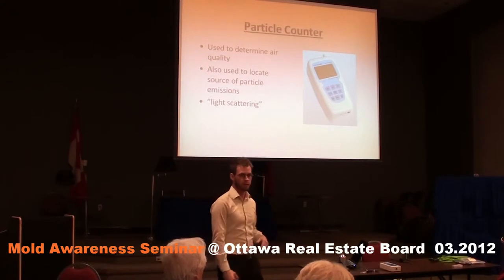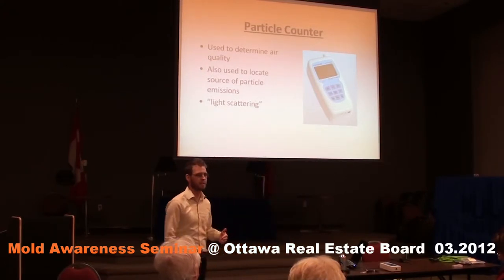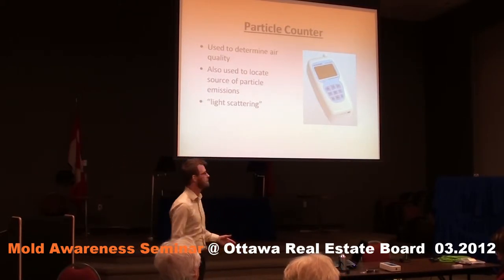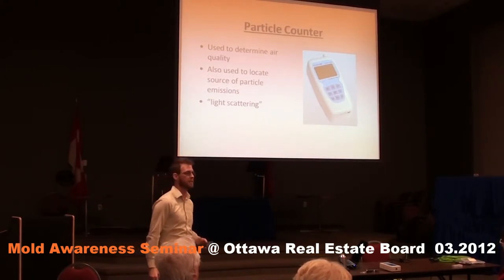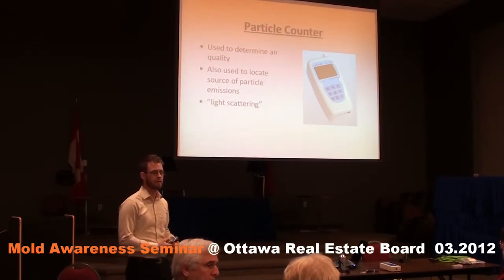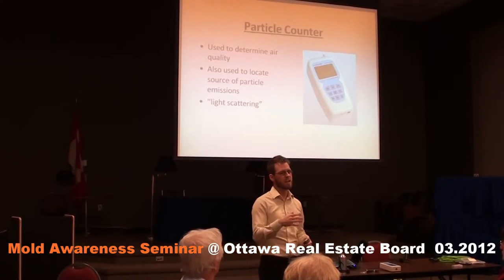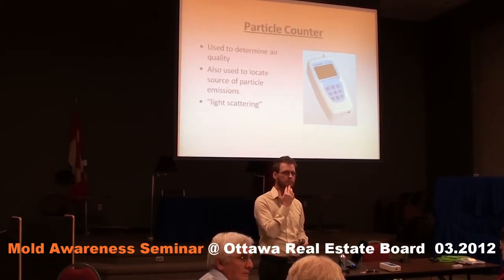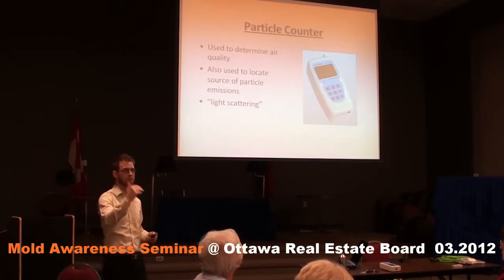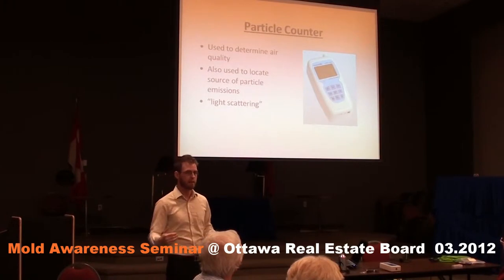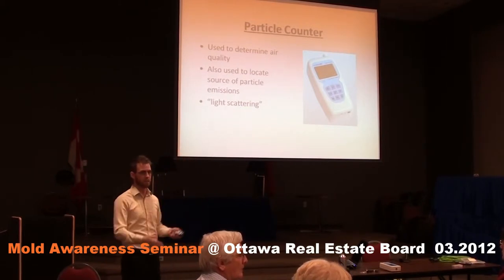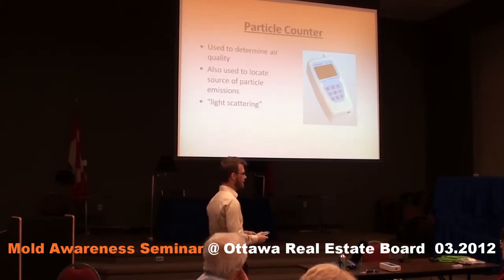The particle counter, which is what we used at the beginning to determine we are now breathing in 550,000 particles, is an interesting device. It's used to locate the amount of particle emissions in the air — it absorbs the particles and generates a count. If you take it outside right now, you'd get roughly one million. It varies on the time of day — early morning or late at night gives a more accurate reading because there are fewer emissions. Temperature is also a factor.